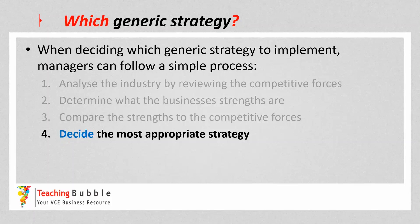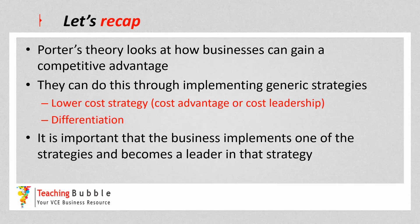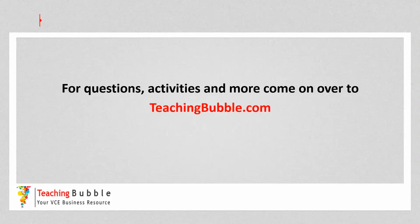To recap: Porter's Generic Strategies theory outlines how businesses can gain a competitive advantage. There's the lower cost strategy, where the business aims to be the low-cost producer in its industry, and the differentiation strategy, where the business aims to be unique in a way that's valued by customers. It's important that a business implements only one of those strategies to be the best at it — if they implement both, Porter says they risk being stuck in the middle. For questions and activities, come on over to teachingbubble.com.